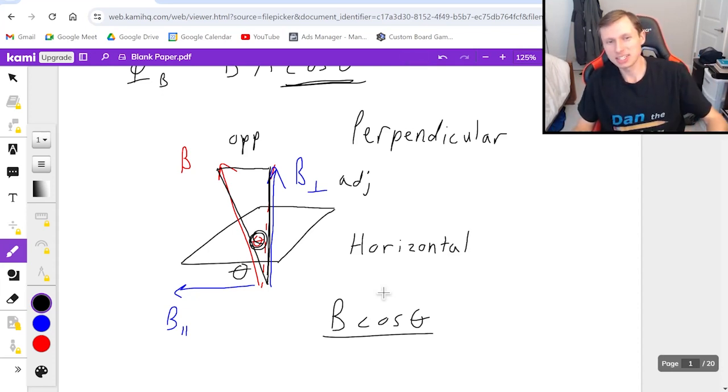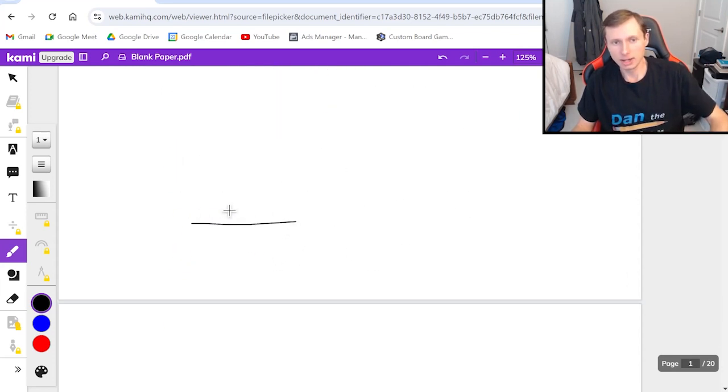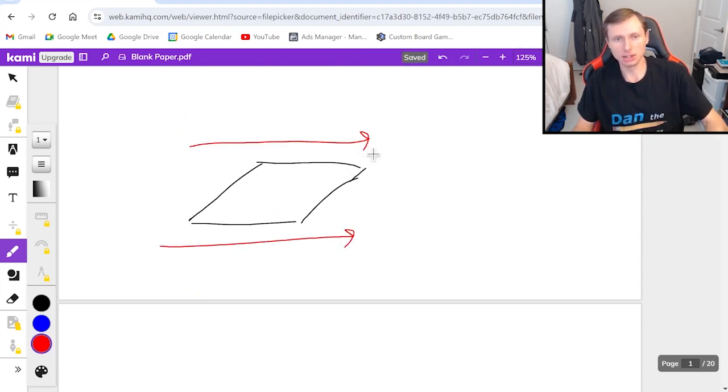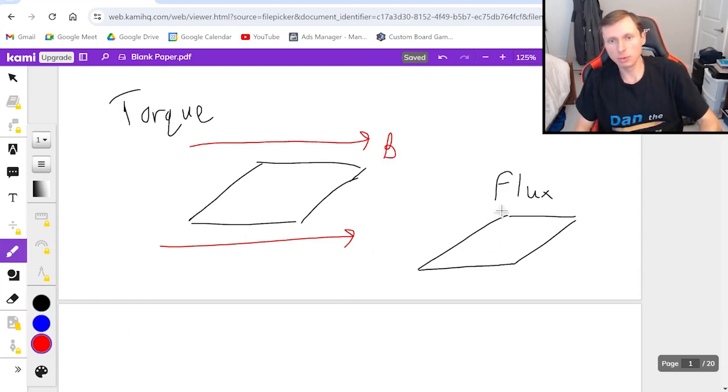One more thing I want to say is that yes, this is the opposite of magnetic torque. Why? Because for magnetic torque, I wanted the B field to be parallel with the hoop to maximize my torque. But when it comes to flux, I want my magnetic field to go straight through it like that. So it's important to know the difference between these two topics because they are not the same.